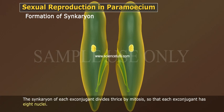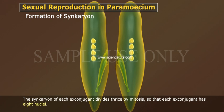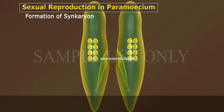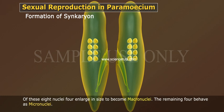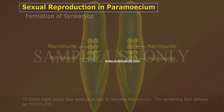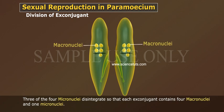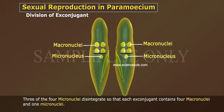The syncarion of each ex-conjugant divides thrice by mitosis so that each ex-conjugant has eight nuclei. Of these eight nuclei, four enlarge in size to become macronuclei and the remaining four behave as micronuclei. Three of the four micronuclei disintegrate, so that each ex-conjugant contains four macronuclei and one micronucleus.